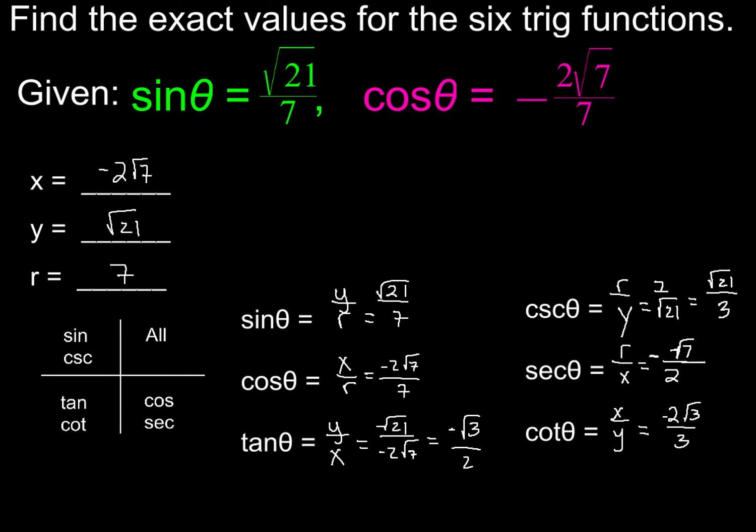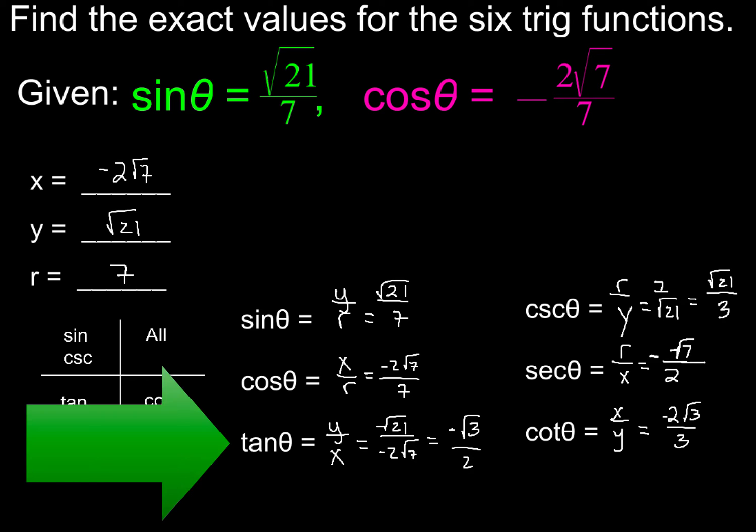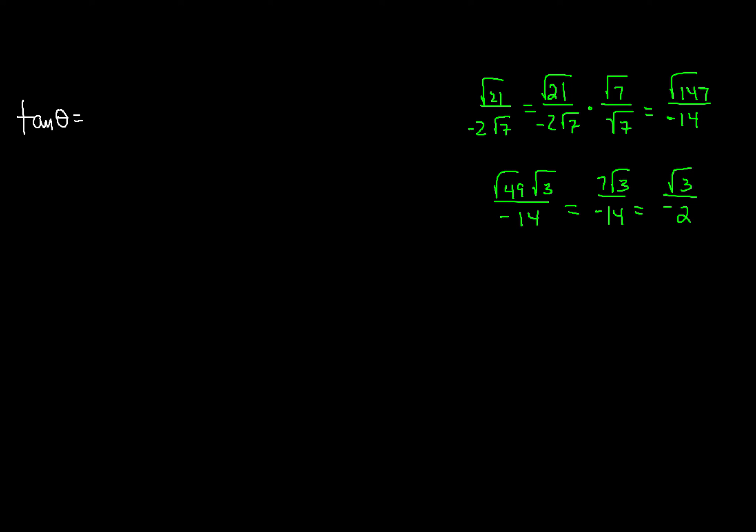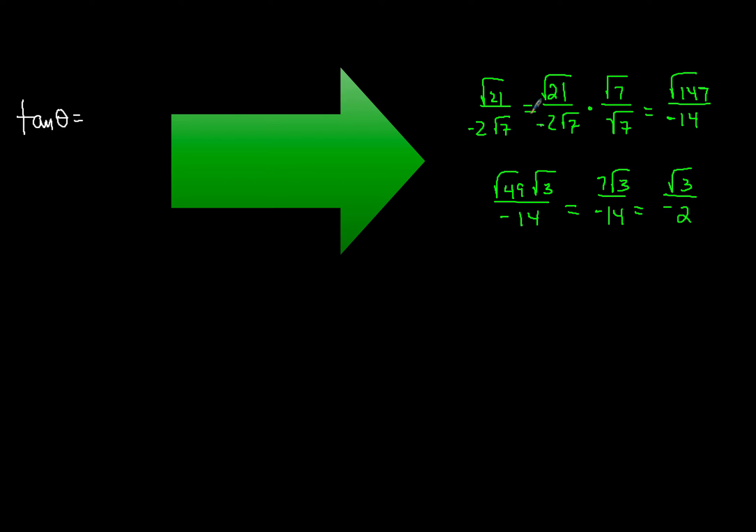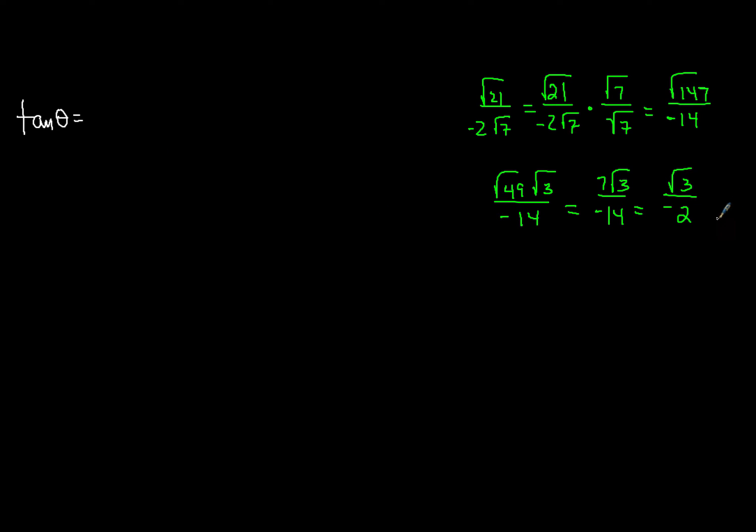So after you go ahead and rationalize everything, these are the answers that you should come up with. But what I want to do real quickly is go over the answer for tangent of theta. So tangent of theta, you end up with a square root of 21 over negative 2 square roots of 7. And when you go through that process to rationalize all that, oh my goodness gracious, by the time you're all done, you end up with square root of 3 over negative 2.